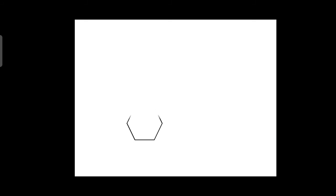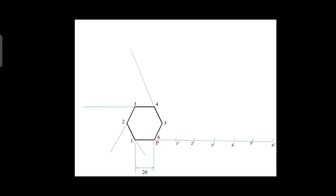The same problem can be drawn by another method. The hexagon side is 20 mm. Locate point P and the remaining points 1 through 6. From point P, draw a straight line. The straight line length is equal to 6 into 20, that means 120 mm. Then divide the straight line into equally 6 parts. After dividing, draw the extension line from each corner: second point extension, third point extension, and 4, 5, and 6th point extension lines.